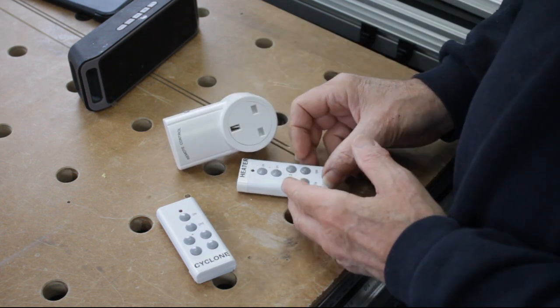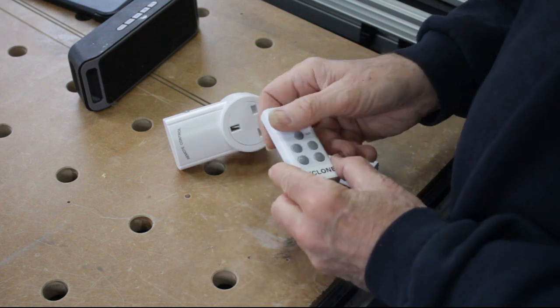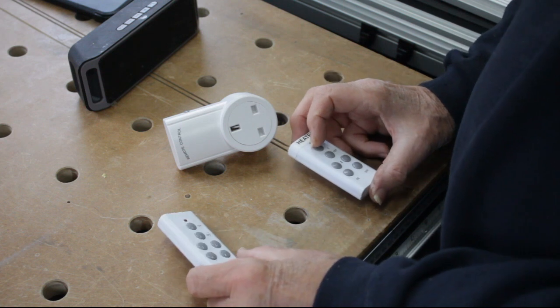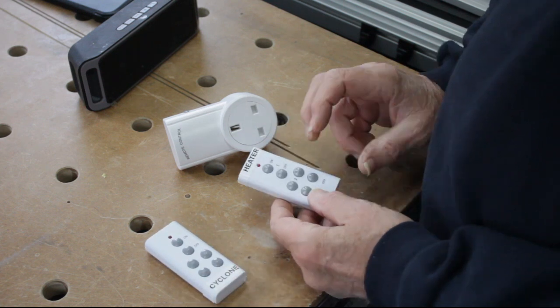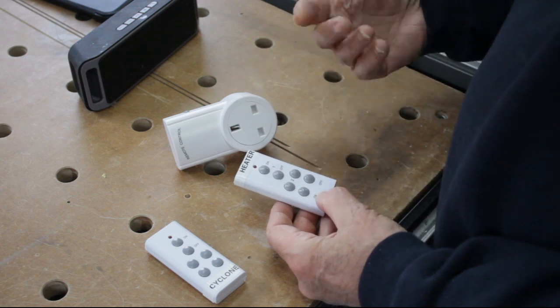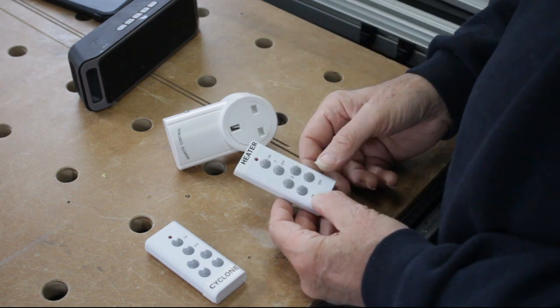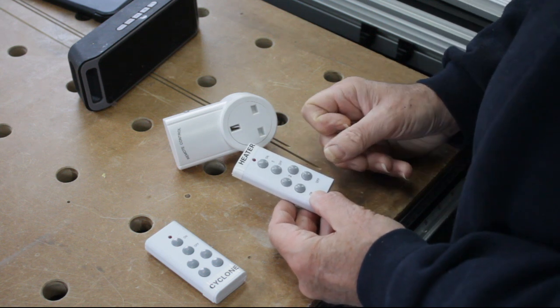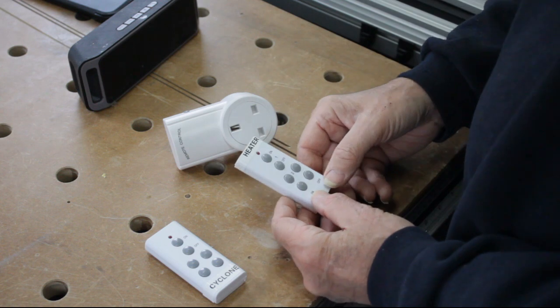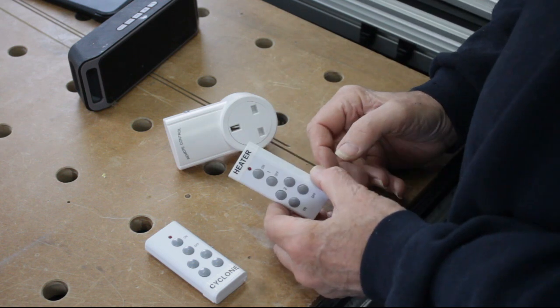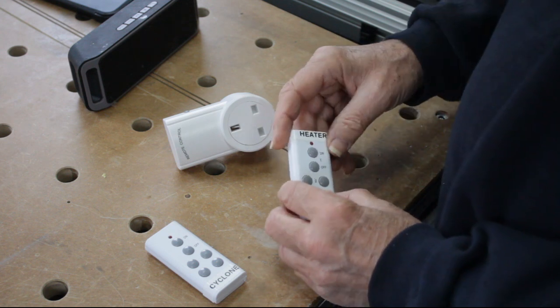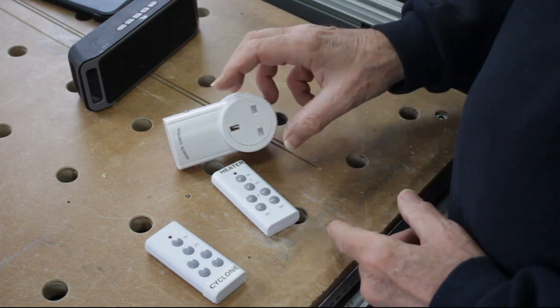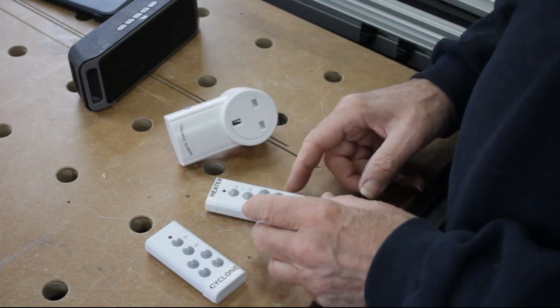They'll handle up to about 10 amps. I bought one to start with for the cyclone, which turns that on and off, and then because it was so useful I bought a couple more which I'm using for like the heater in the shed. I very often use it on the charging station which I'm only using as and when I want to charge a battery or anything.